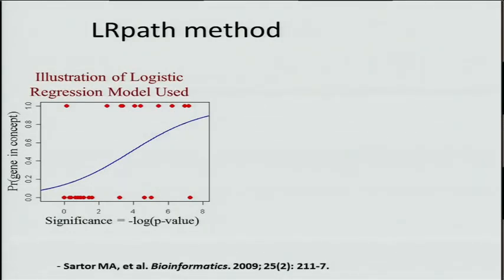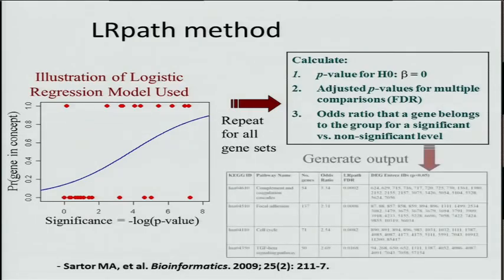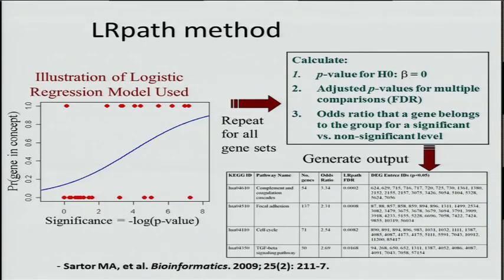I want to take a couple minutes to introduce the LRPath method. LR stands for logistic regression — a logistic regression model is used to analyze each gene set of interest. Logistic regression has nice properties for gene set enrichment testing. Fisher's exact test is probably the most widely used test across different programs, and logistic regression can be considered an extension of this without the need to choose any significant cutoffs for genes or sites for differential methylation or expression. It also enables calculation of an odds ratio, similar to a Fisher's exact test. This original algorithm was published in Bioinformatics Journal in 2009.